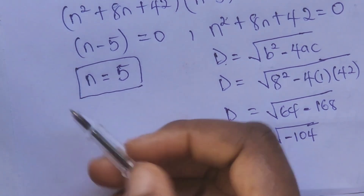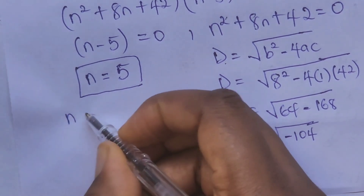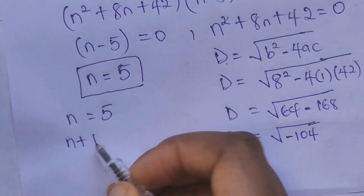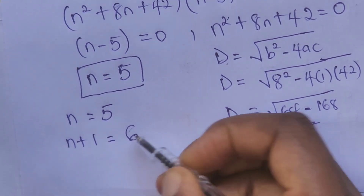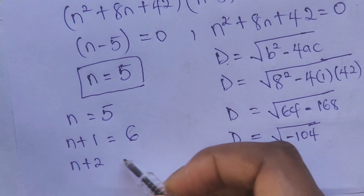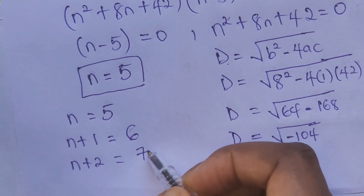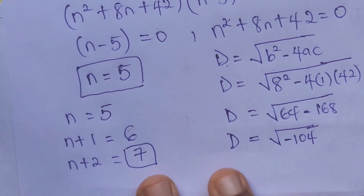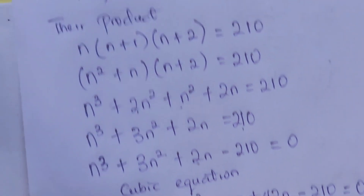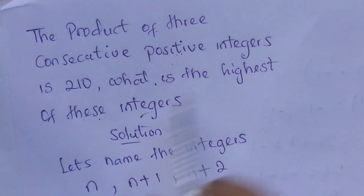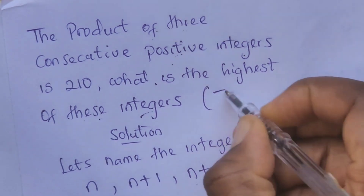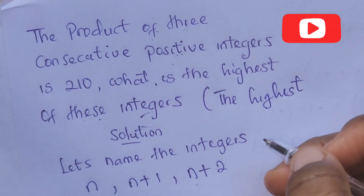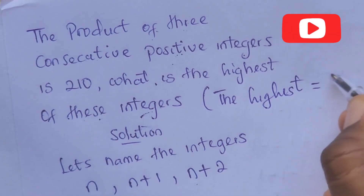So we take n equal to 5. If n equals 5, then n plus 1 equals 6 and n plus 2 equals 7. The largest number is 7. The highest of these integers equals 7.